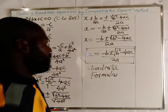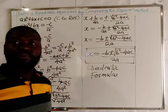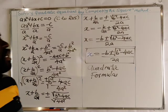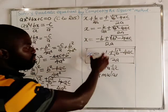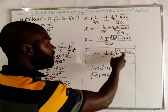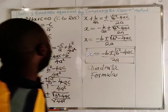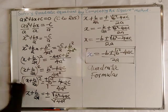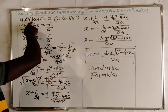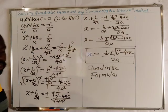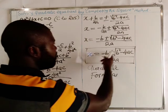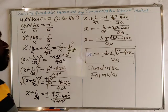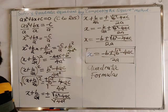The quadratic formula can be used to solve any quadratic equation. As long as you know that a is the coefficient of x squared, b is the coefficient of x, and c is the constant term, you simply substitute those values into the formula — negative b plus or minus the square root of b squared minus 4ac, all over 2a — to find the unknown values.